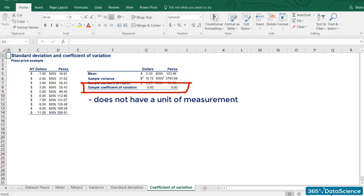Notice that it is not dollars, pesos, dollars squared, or pesos squared. It is just 0.60. This shows us the great advantage that the coefficient of variation gives us. Now, we can confidently say that the two datasets have the same variability, which is what we expected beforehand.